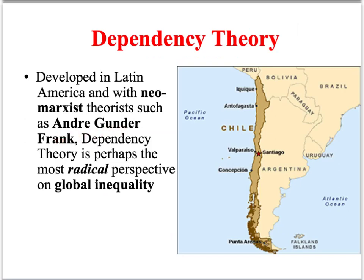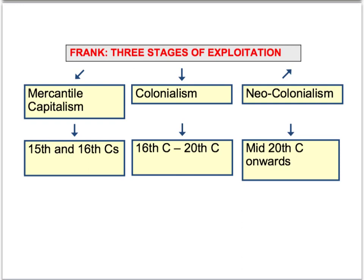Andre Gunder Frank was half German, half American, but spent a lot of his career working as an economic advisor in South America. For example, he was a key economic advisor to the Allende regime in Chile. Dependency theory is perhaps the most radical perspective on global inequality in terms of its left-wing ideological orientation. According to Frank, three stages of exploitation can be identified throughout history. The first phase is mercantile capitalism, which emerged during the 15th and 16th centuries.